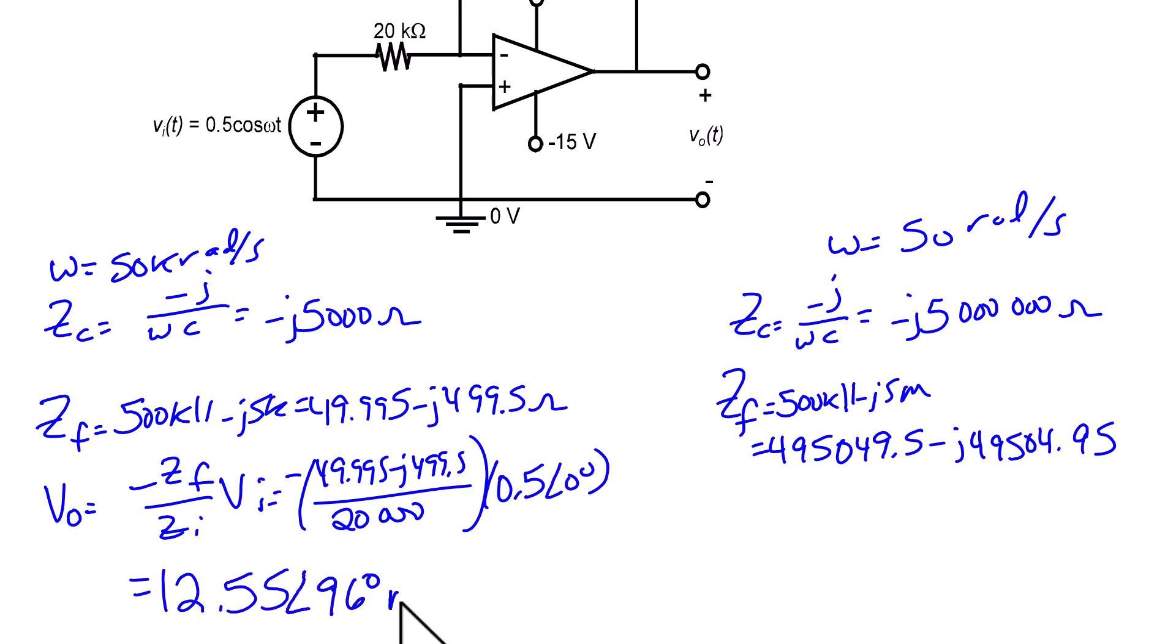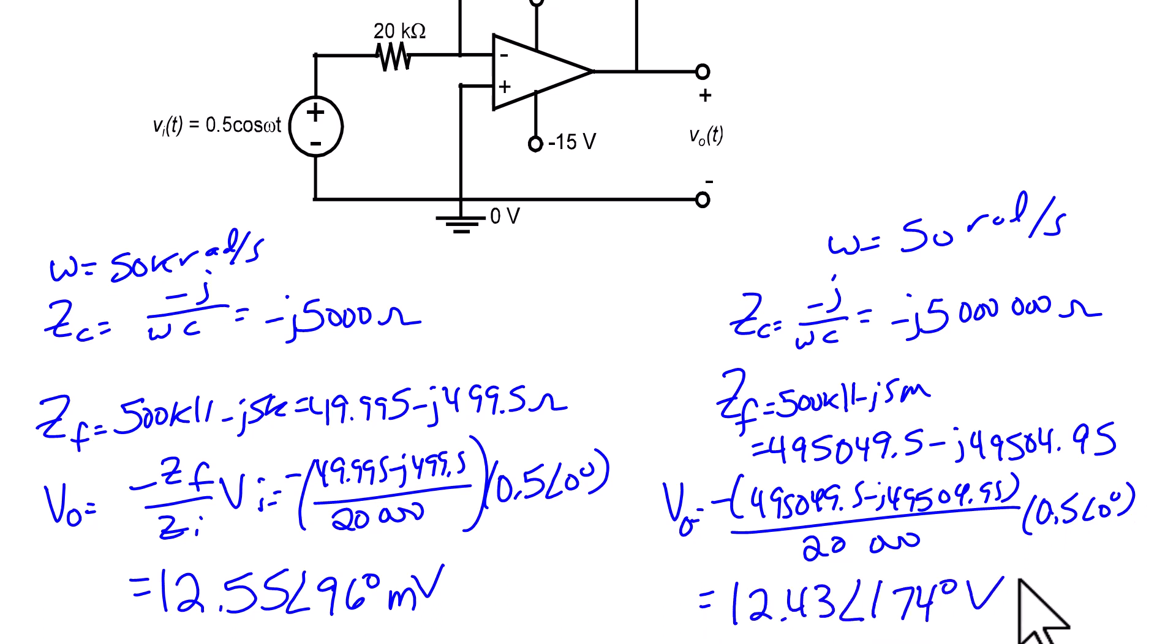Or at 50 radians per second, we get V0 equals 495,049.5 minus j 495,049.5 over 20k times 0.5, which is 12.43 with an angle of 174 degrees. So we now see that we have a low pass filter here because as the frequency increases, the output voltage decreases.